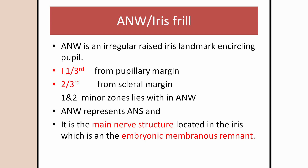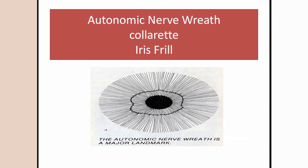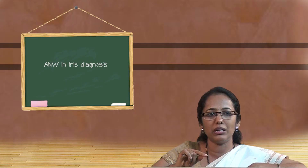The autonomic nerve wreath in the iris is the main nerve structure located in the iris and is also an embryonic membranous remnant present in our body. You can look at this graphical representation in the slide — the dark circle you see outside the pupil is called the autonomic nerve wreath.